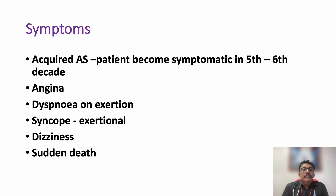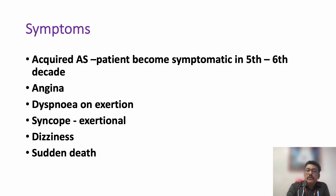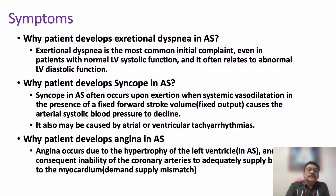In patients with acquired aortic stenosis, symptoms occur very late. But with repeated attacks of rheumatic heart disease, symptoms can even occur at an early age. The classic symptoms are angina, dyspnea on exertion, syncope — especially post-exertional syncope — dizziness, and sudden cardiac death. These three — dyspnea, syncope, and angina — are the most important symptoms to understand.